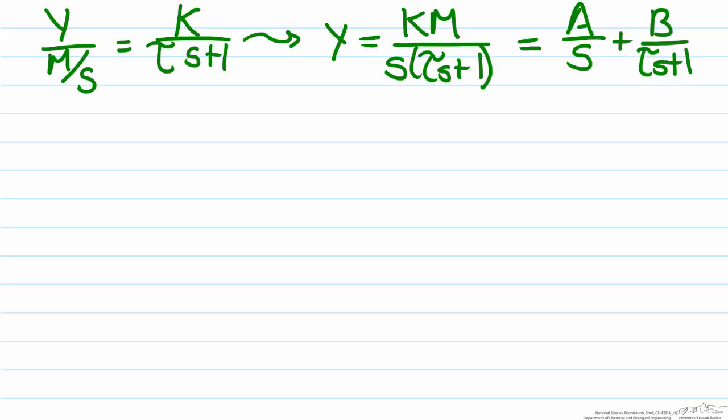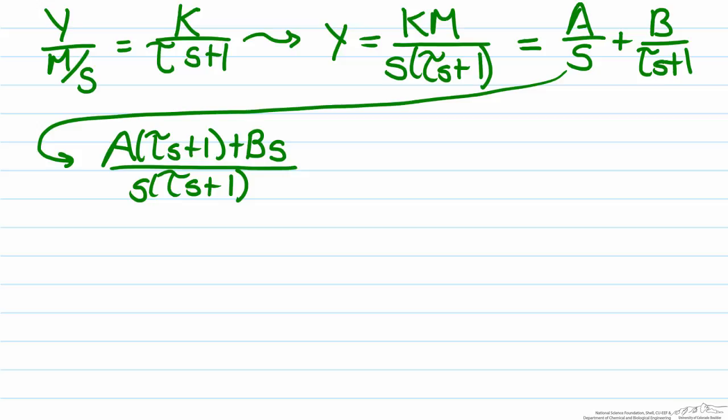We then find a least common denominator for our process which will be s times tau s plus one, and we know the fact that the numerator has to equal km.